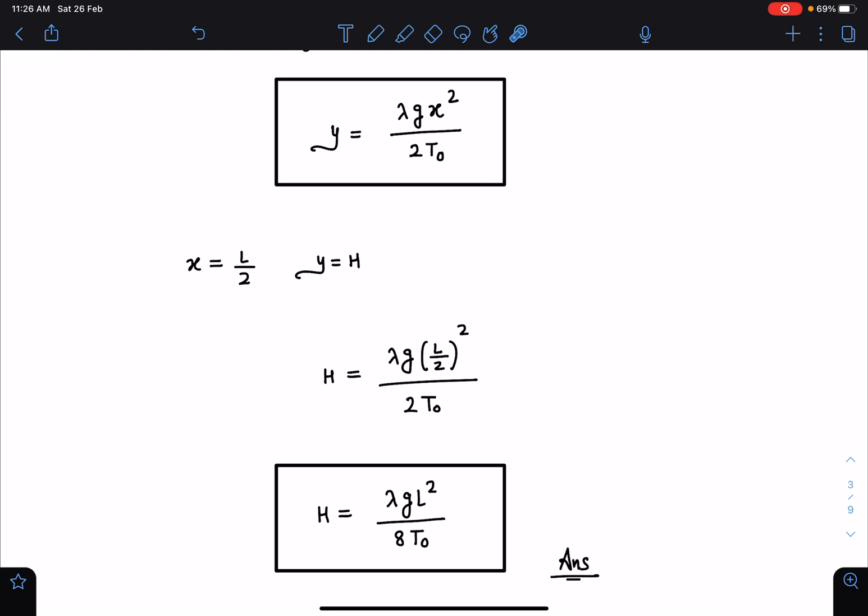So similarly here, H equals y equals H, and λg(L/2)² divided by 2T₀. So if I simplify this, I am getting λgL²/(8T₀), which is going to be the final answer for this problem.